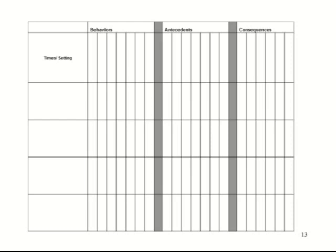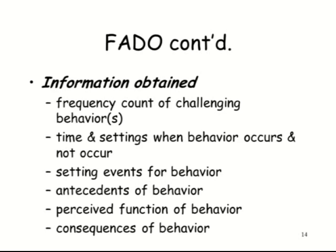Because you're only writing numbers down, you can do this very quickly — even while you're teaching. You may not be able to write it down the instant the behavior happens, but you jot down a number a few times as quickly as you can. The information you get includes frequency of behavior, time and setting from the schedule on the left margin. If you suspect setting events are involved, you can add another column for them. If relevant, you can also add a column for perceived function — for instance, the perceived function was escape even though the actual consequence was the student being sent to timeout.